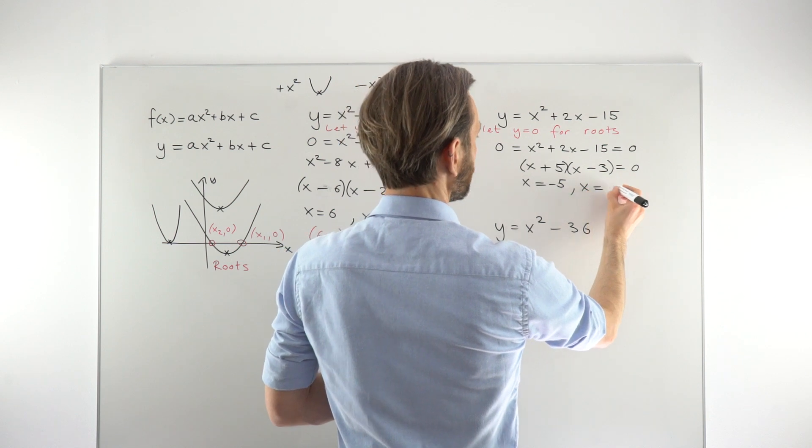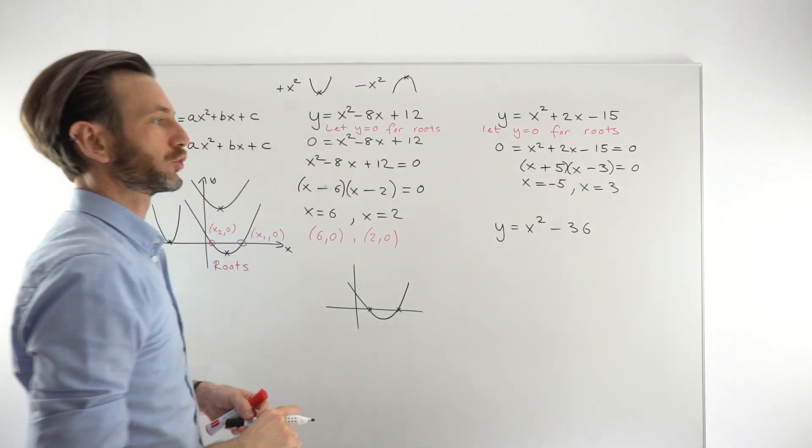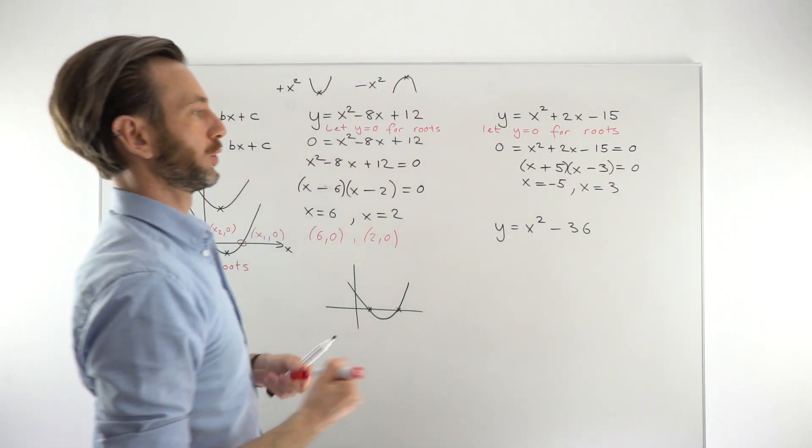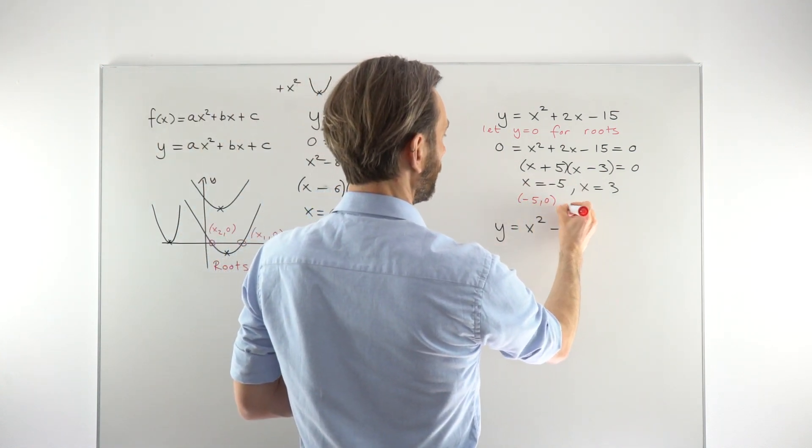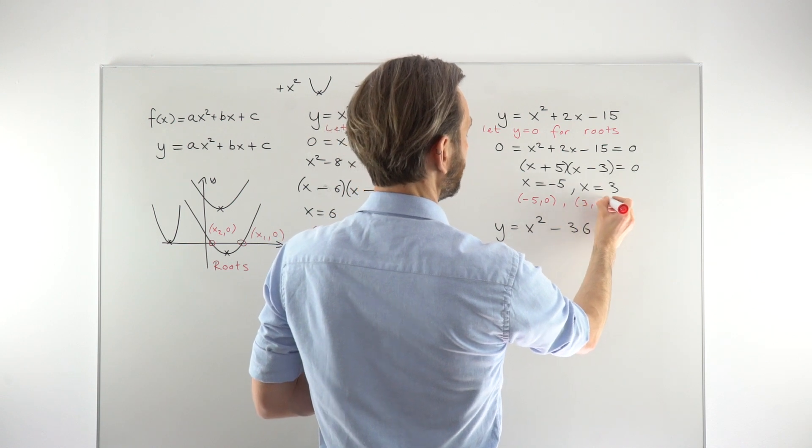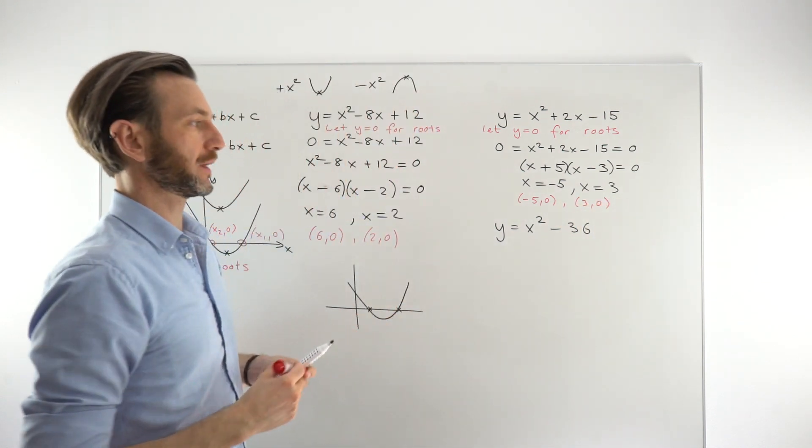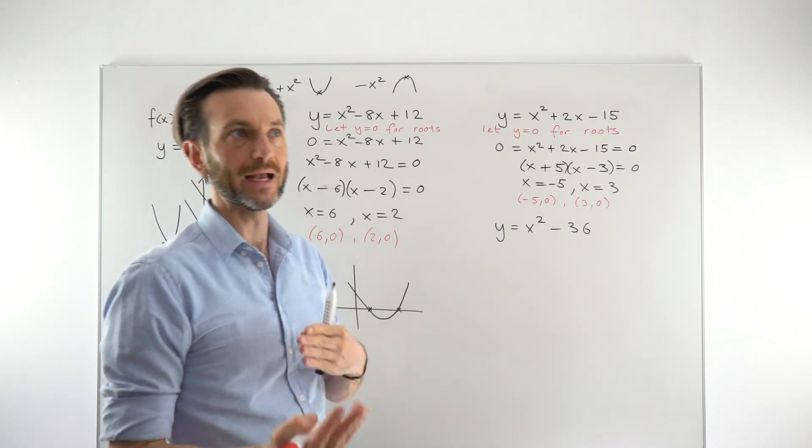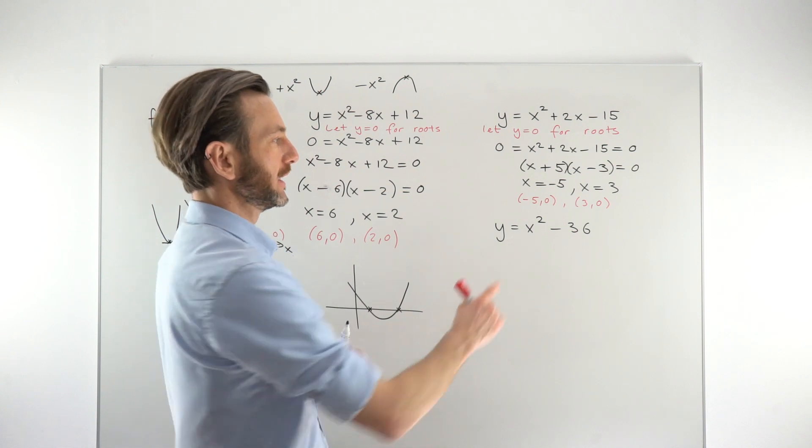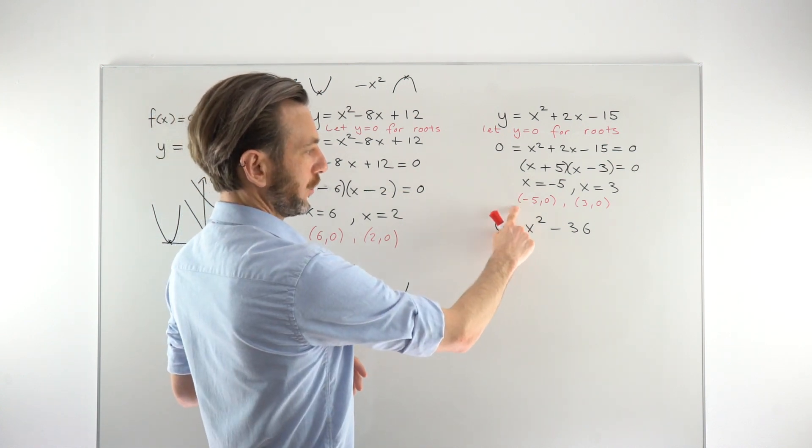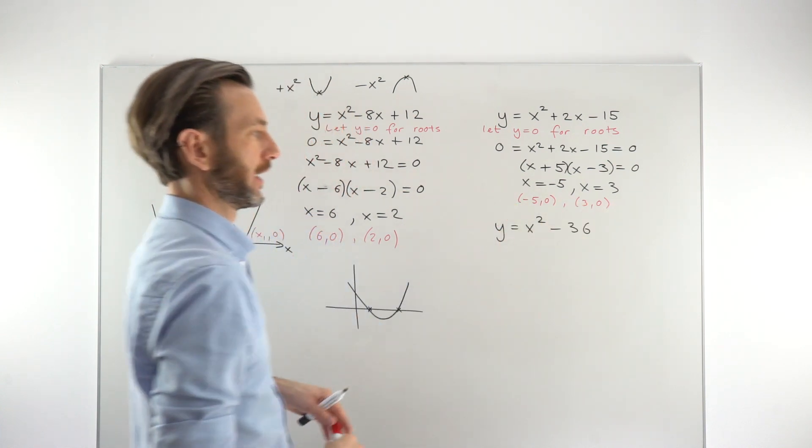I'm going to go ahead and factorize these into two brackets. So we would need an x and an x for this one, a 5 and a 3. We need a positive 5 and a minus 3, giving us solutions to the quadratic equation of x equals minus 5 and x equals positive 3. So those are our two x coordinates of our roots. The full coordinates would be minus 5, 0, and 3, 0. Be careful with questions like these, because sometimes a question will say find the x coordinate of the roots. Sometimes it will just say find the roots.